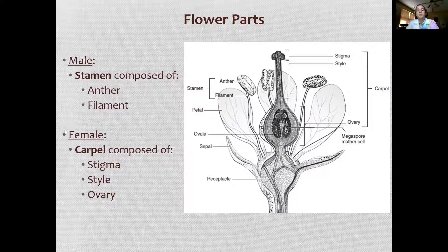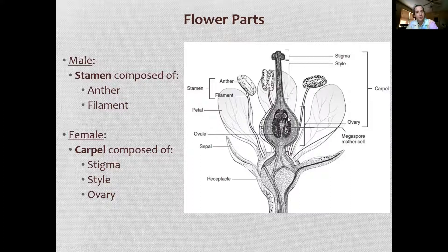The female part is the carpel, composed of a stigma, a style, and an ovary. So ovary — you should know as female. I should surely hope.